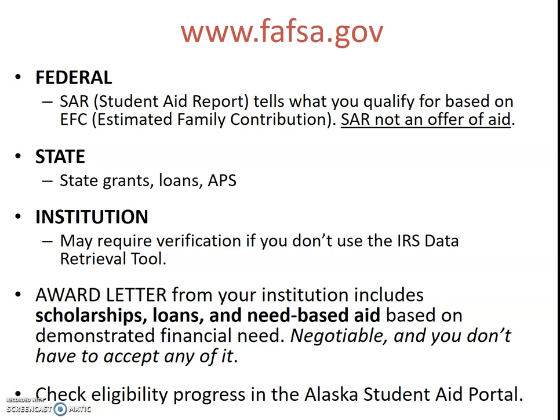After you submit your FAFSA, it goes to the federal government and you receive a SAR — Student Aid Report — which tells you what you qualify for based on your estimated family contribution; that's not an offer of aid. Next, your FAFSA goes to the state so you can find out what state grants, loans, and Alaska Performance Scholarship level you qualify for. Then it goes to each institution you list — up to ten colleges. Eventually you'll get an award letter with scholarships, loans, and need-based aid. It's negotiable, and you don't have to accept any of it.